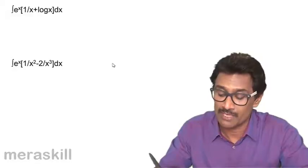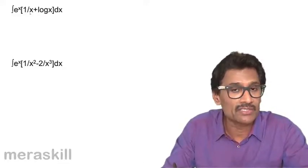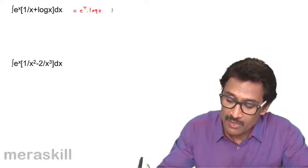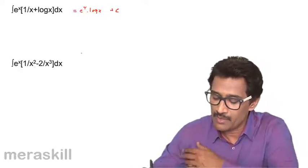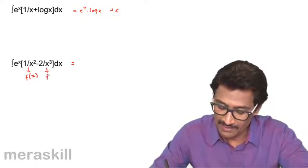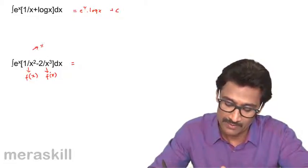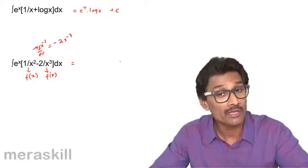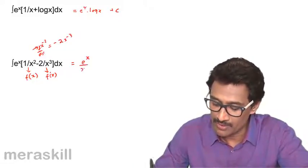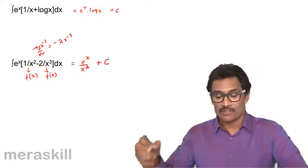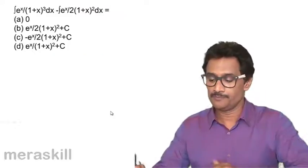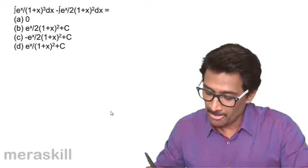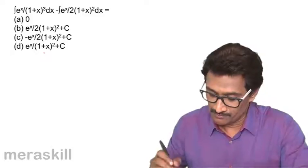Now here we should not mix up — just because a function is written first doesn't mean it is f(x) and the other is f'(x). This one is also going to be e raised to x · log x plus C, not 1/x. Similarly, for the case with 1/x², taking d/dx of x raised to minus two gives minus 2x raised to minus three, which is minus 2/x³. So the result is e raised to x · (1/x²) plus C.